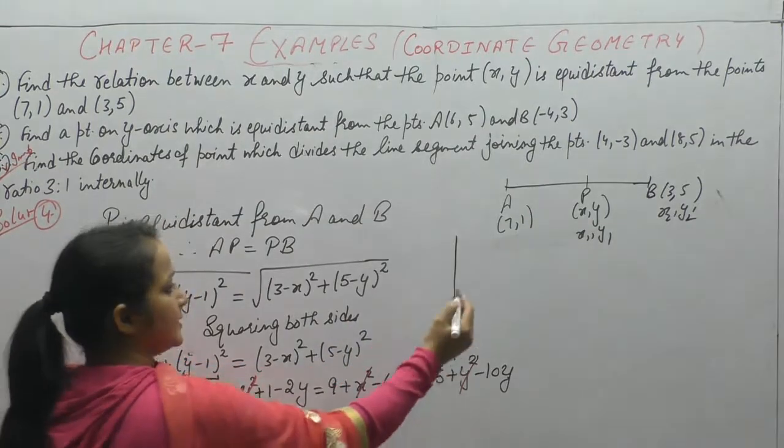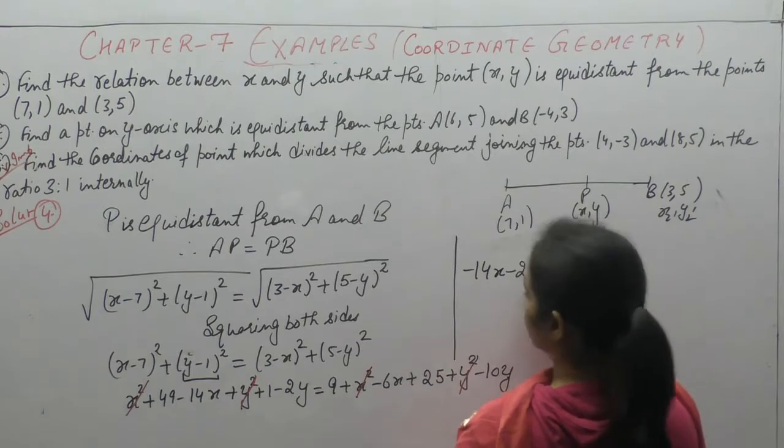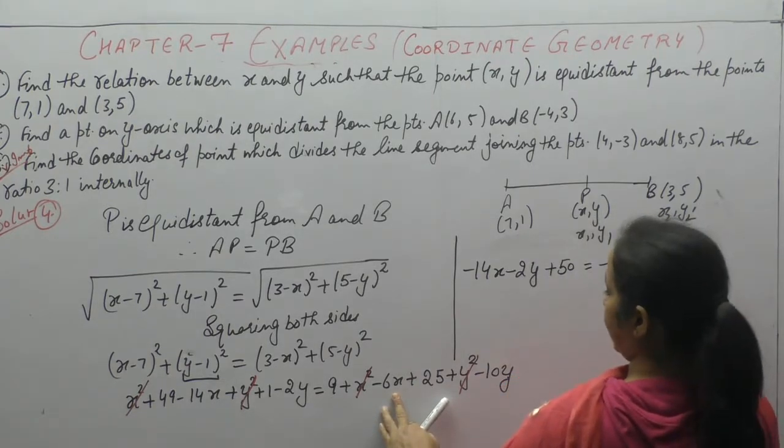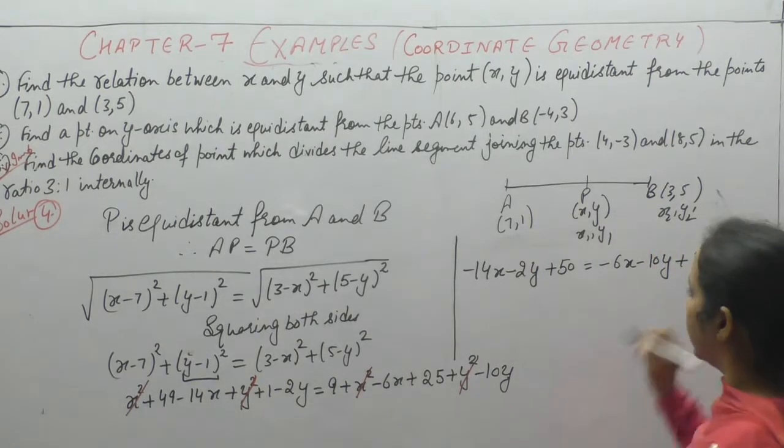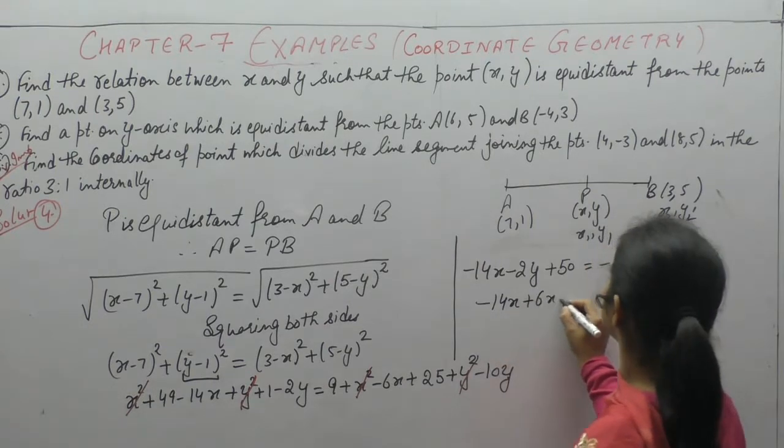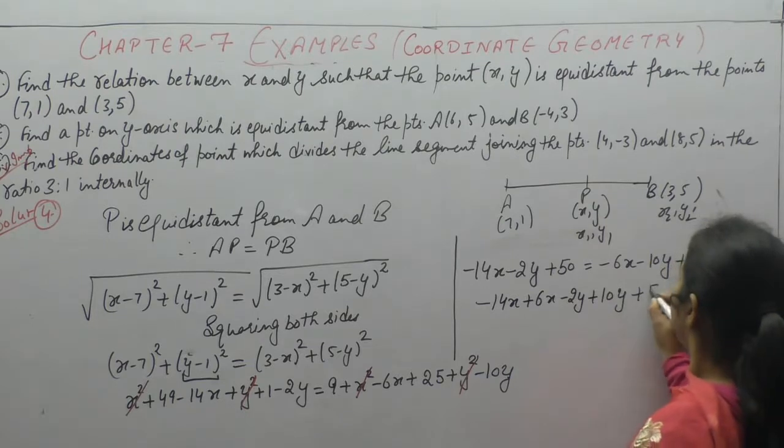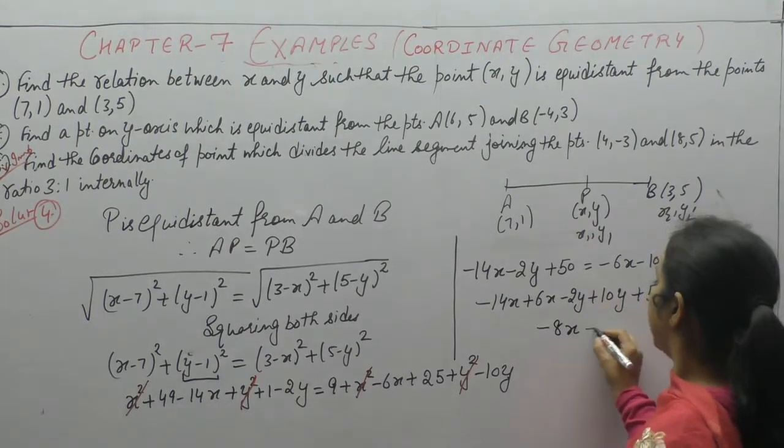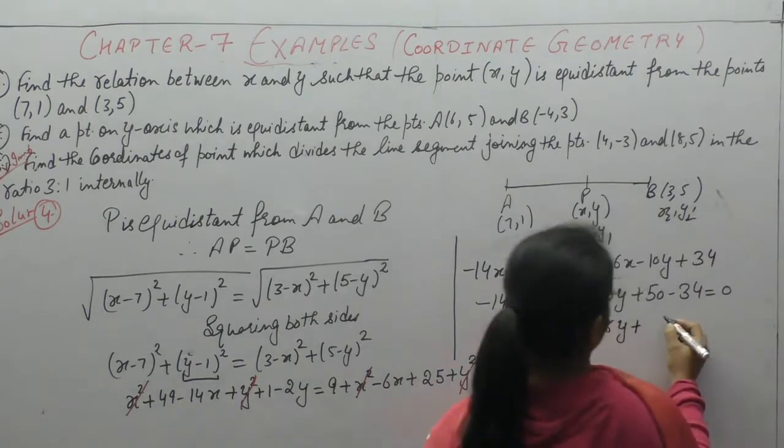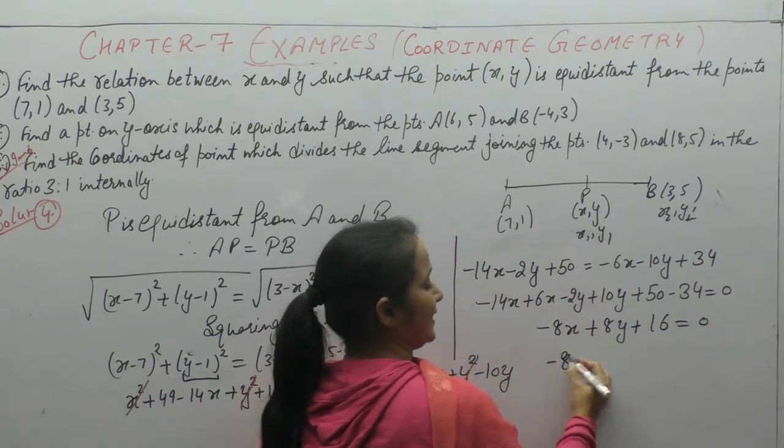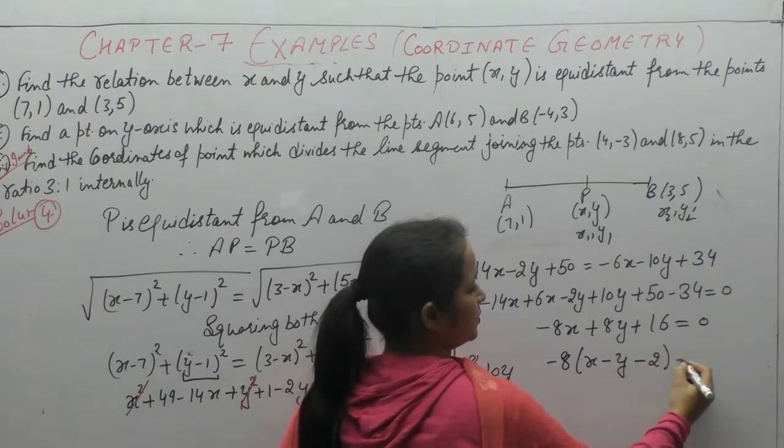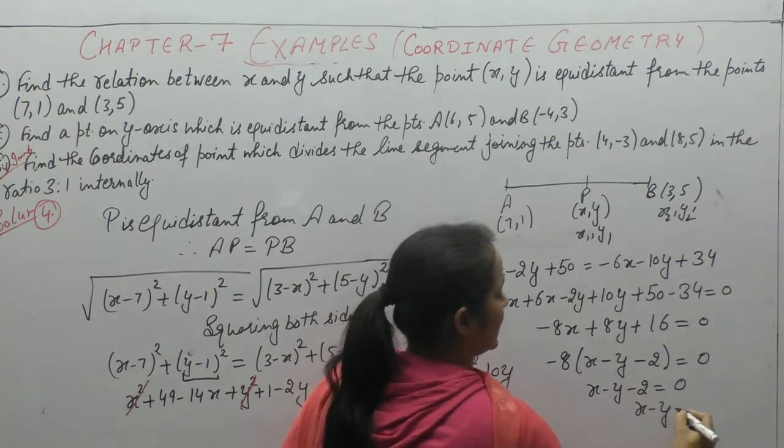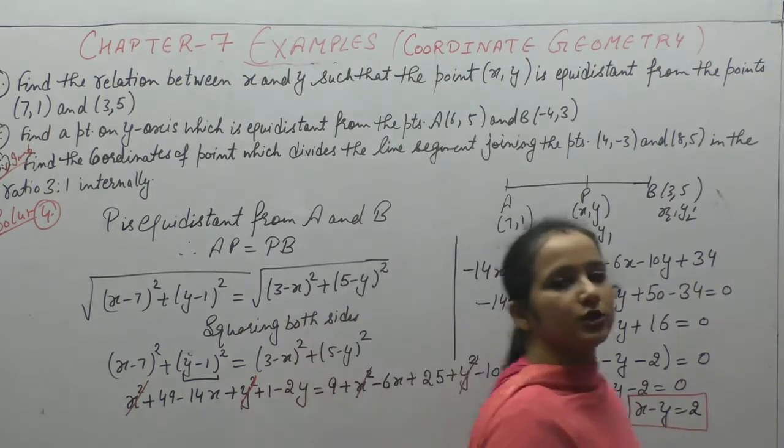x² and y² cancel. We get -14x - 2y + 49 + 1 = -6x - 10y + 25 + 9. Simplifying: -14x + 6x - 2y + 10y + 50 - 34 = 0. This gives -8x + 8y + 16 = 0, so x - y = 2.